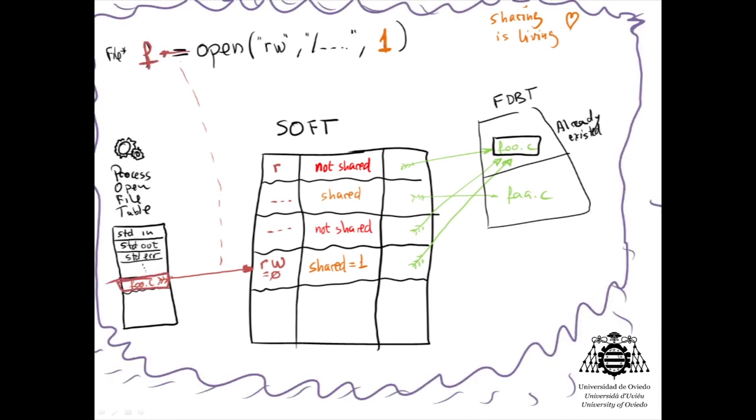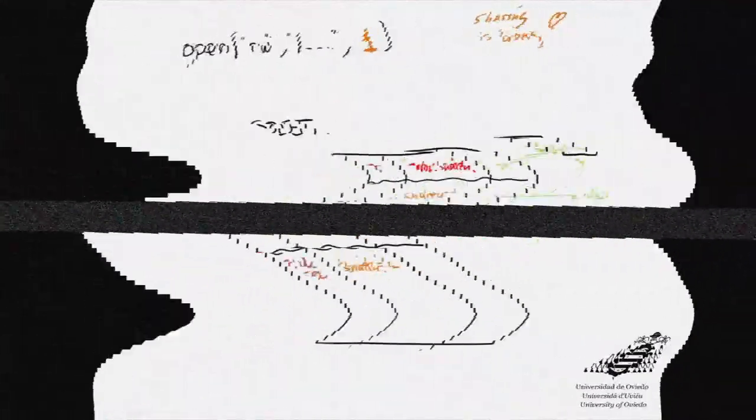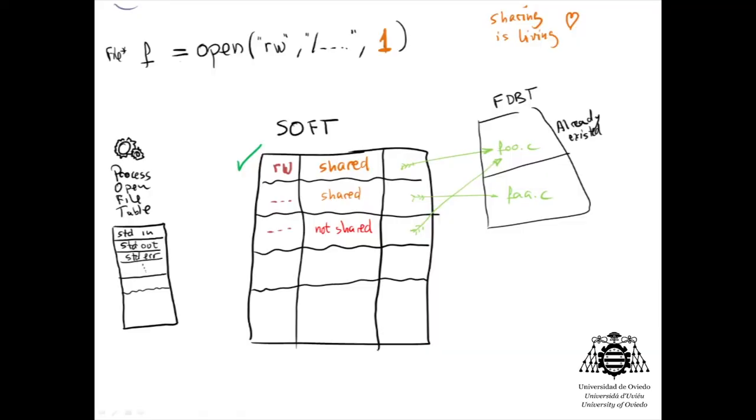But what if the shareable entry did exist? Let's rewind a bit. In this case, provided that the file, the sharing mode, and the access mode are the same,